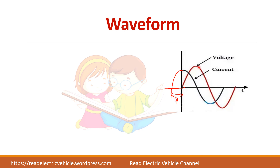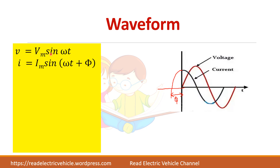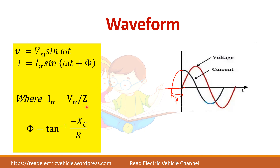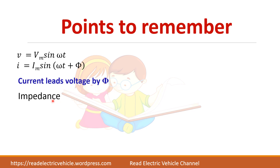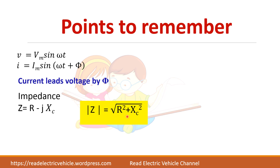Looking at the waveform, the voltage waveform starts at zero whereas the current is leading by an angle phi. So V equals Vm sin omega t, but I equals Im sin(omega t plus phi) because the current starts earlier. The key points to remember are: V equals Vm sin omega t, I equals Im sin(omega t plus phi) for an RC circuit, and phi equals tan inverse of minus Xc by R. The current leads the voltage by angle phi, and impedance Z equals R minus j Xc, where the magnitude of Z equals root of R squared plus Xc squared.